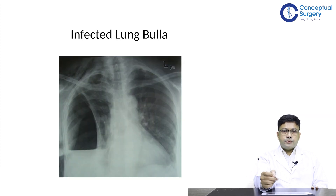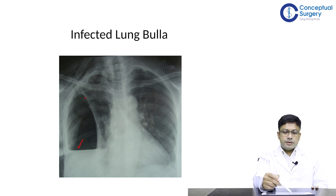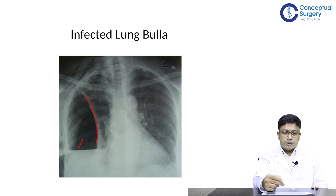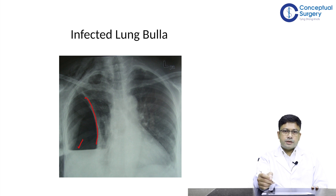Another X-ray shows an air-fluid level on the right side with lung markings visible on the other side. This is a picture of an infected lung bulla, which also does not require immediate chest tube insertion, but requires proper evaluation with CT and later a definitive surgical procedure like bullectomy.